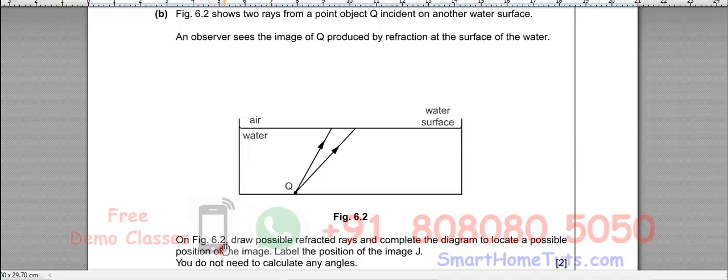On figure 6.2 draw possible refracted rays and complete the diagram to locate a possible position of the image. Label the position of the image J. You do not need to calculate any angles.